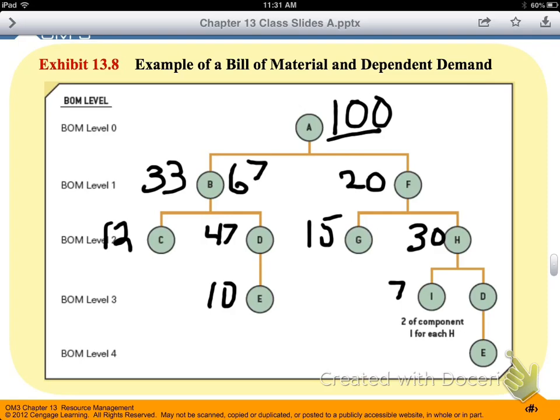And if we carry that logic the rest of the way down this dependent demand, if we have 67 items of B that we need to create and we've got 12 C items on hand, we know that we need the difference, which is 55. So we need to create 55 C items in order to fulfill our order of 67 B items.